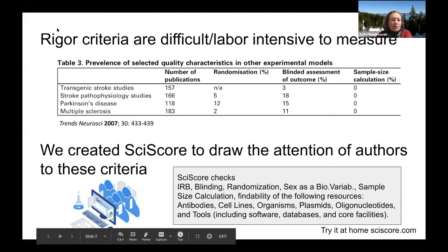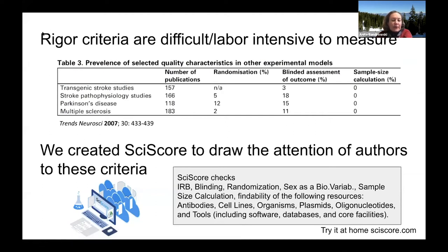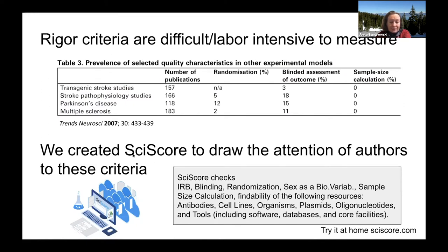One of the main things when trying to measure rigor criteria is that this is a very labor-intensive process. This is one of the classical papers, published in 2007. The authors actually read and categorized about 500 papers, looking at things like randomization, blinding and assessment of outcome, and sample size calculations. This really became the impetus for some of the NIH criteria.